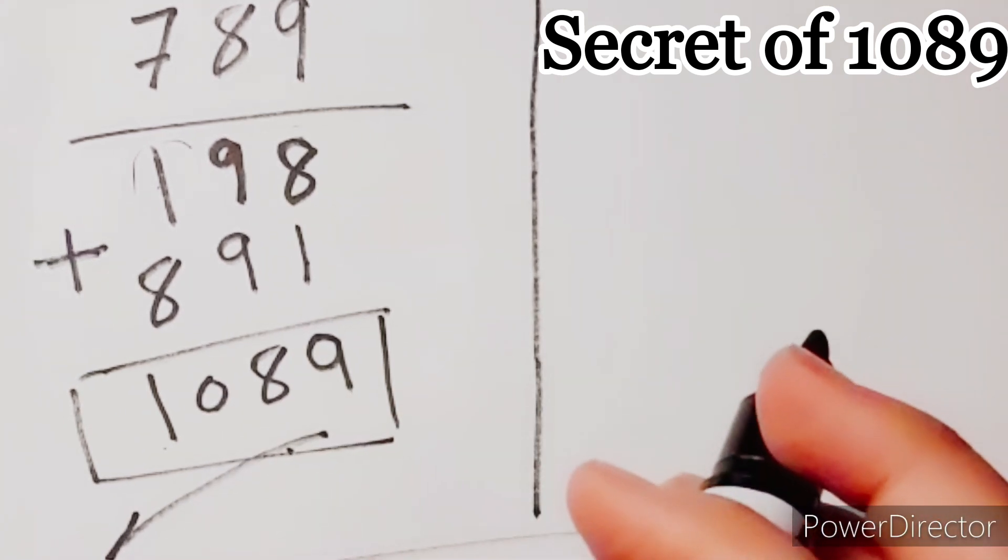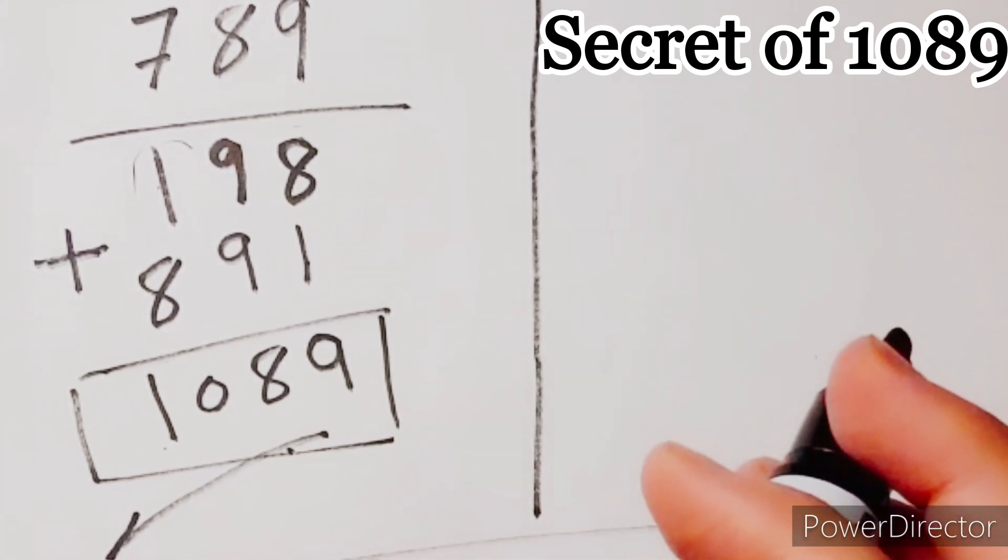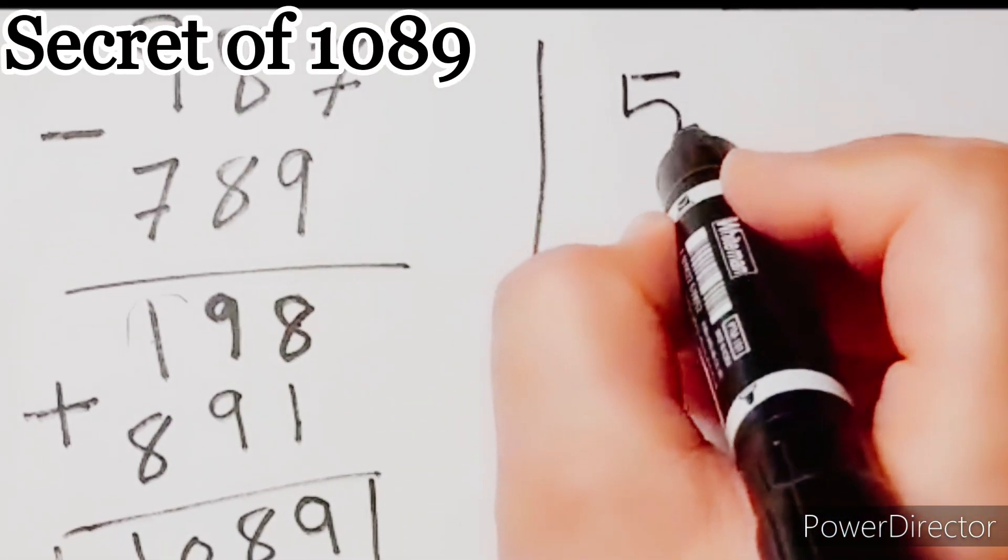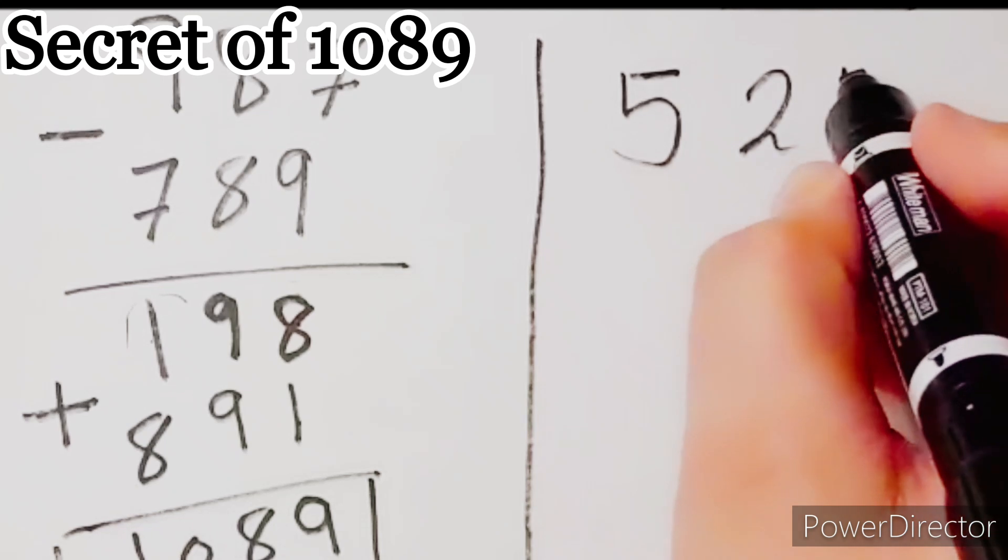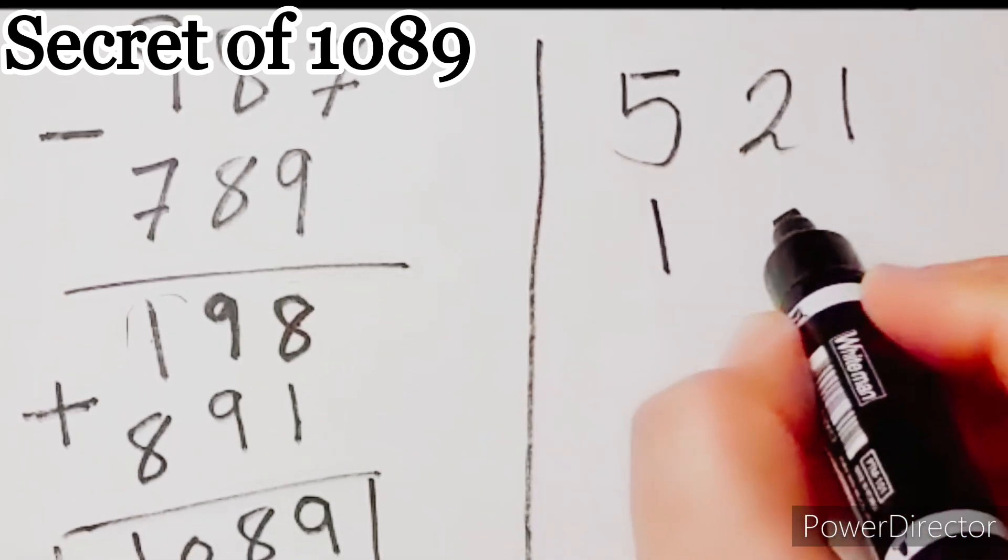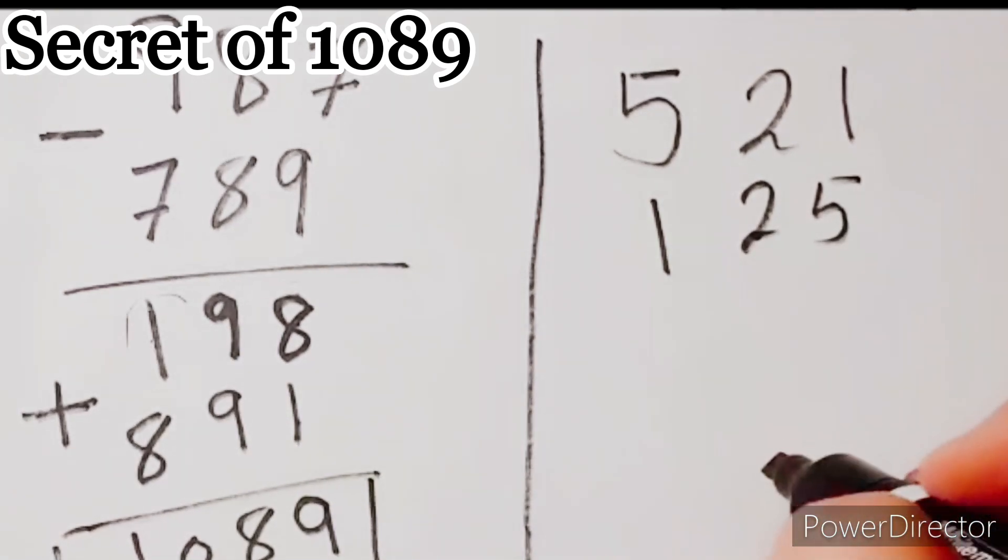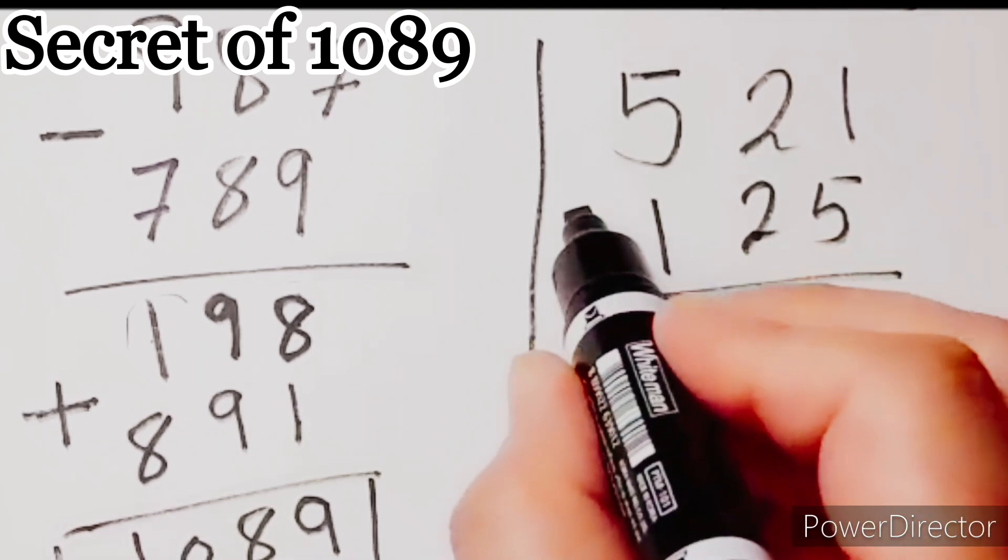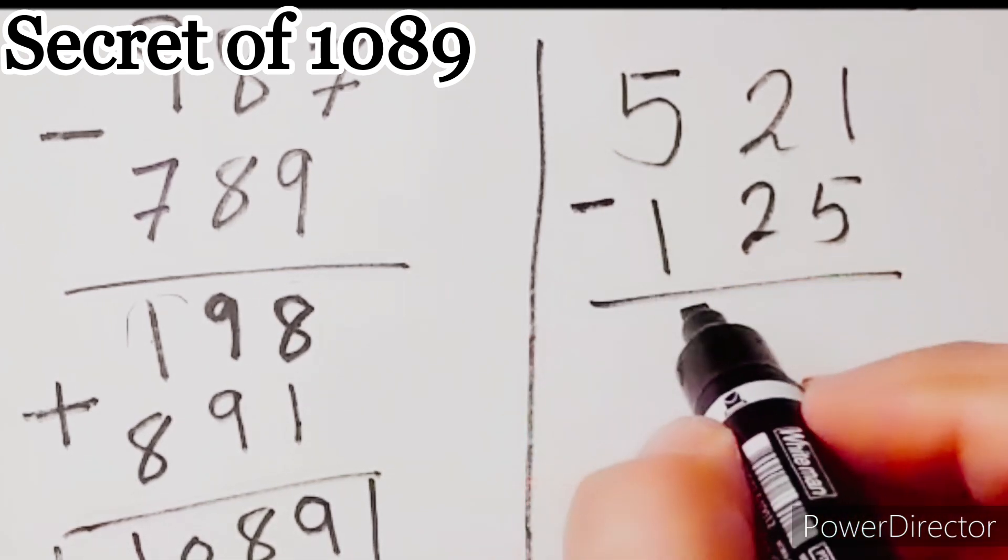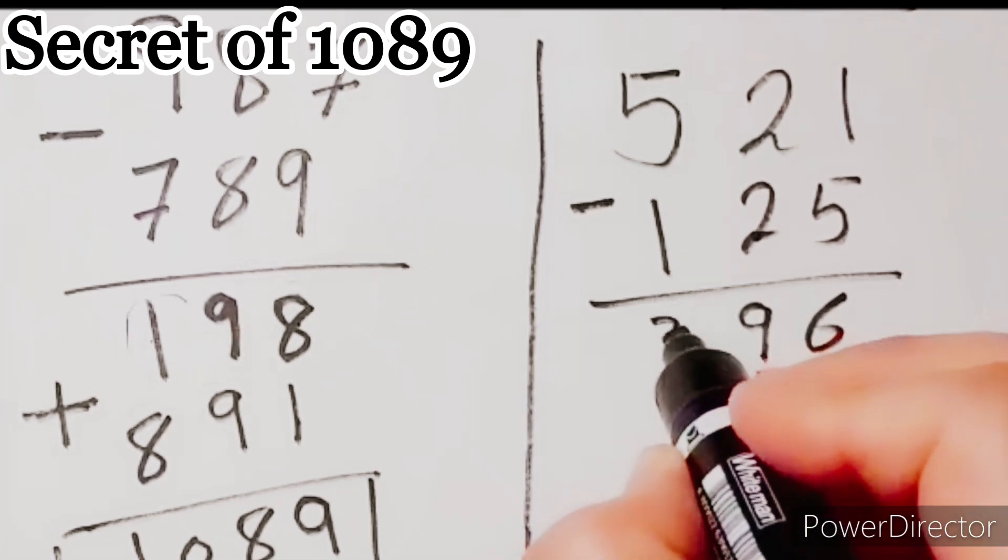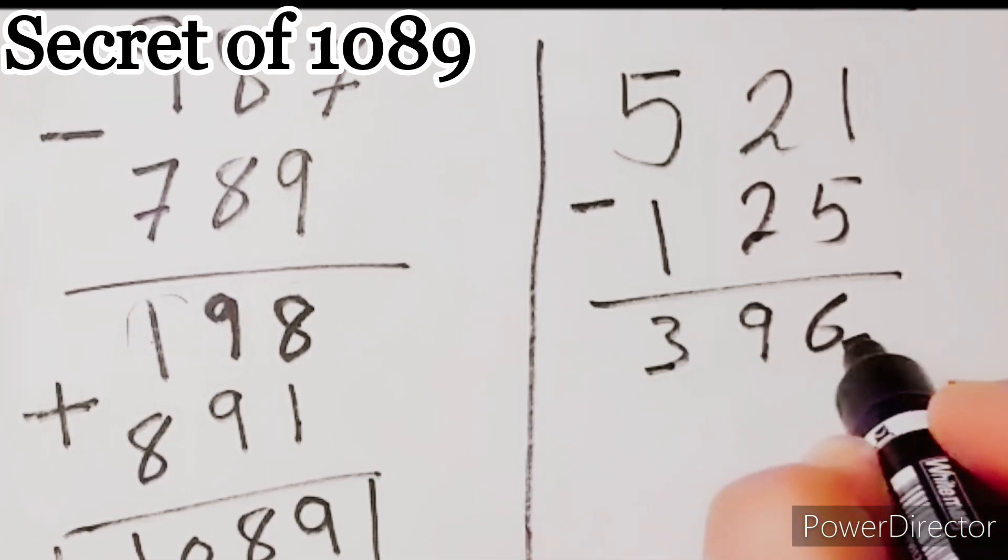Write any number consists of three digits, such as 521, and its inverse 125. First step, find the difference between them: 6, 9, 3, 396.